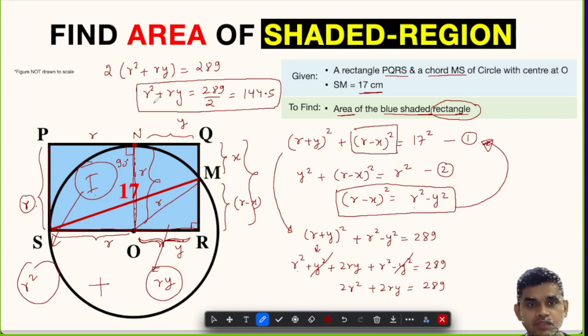And if we add these two, R² + RY, we will get the area of this entire blue rectangle, and that is what we have got. R² + RY = 144.5 square units, or in fact it is centimeter. So this will be 144.5 square centimeters.